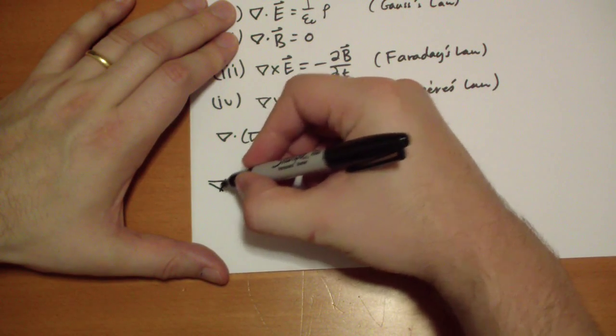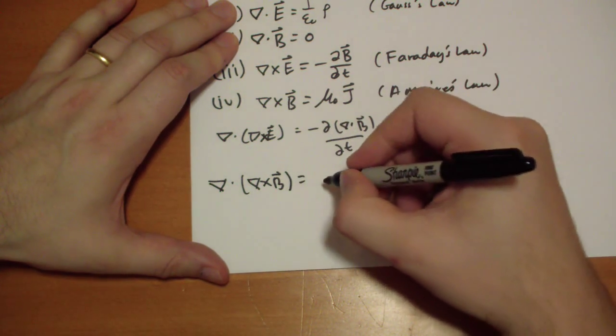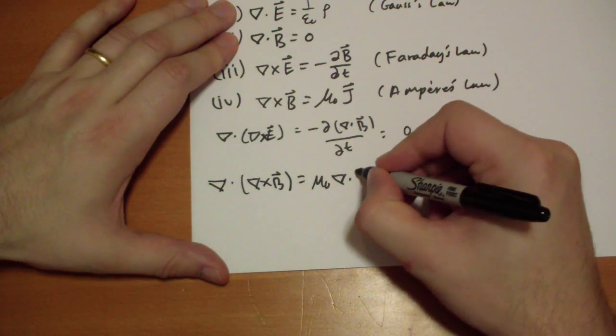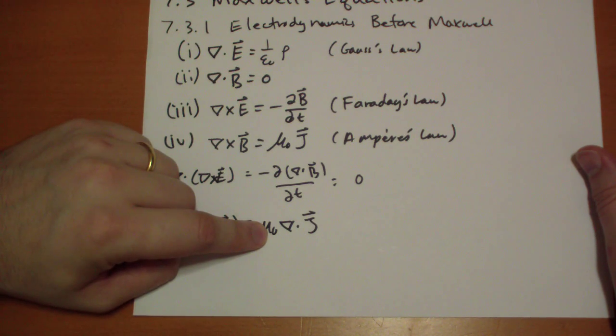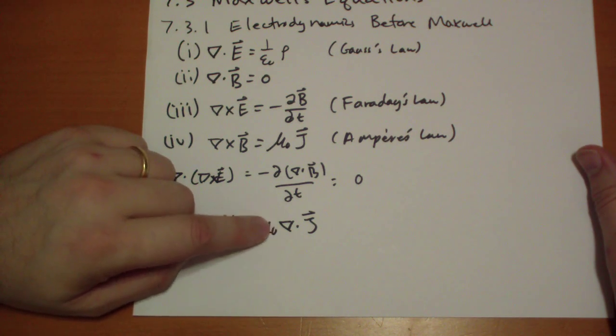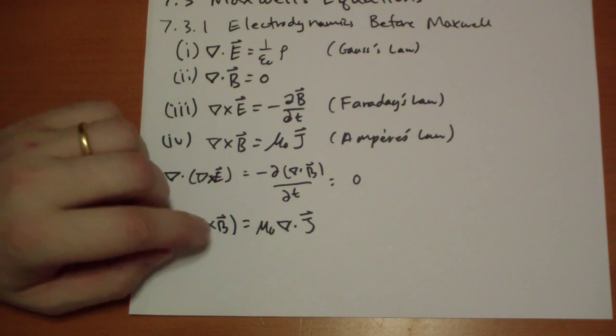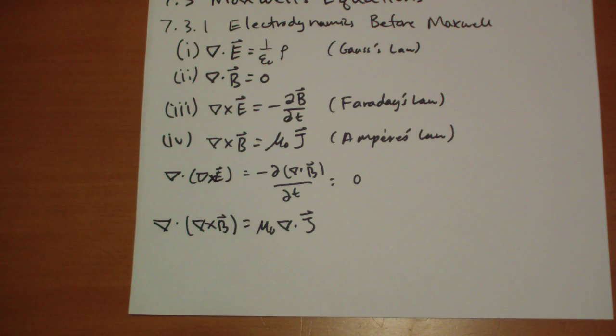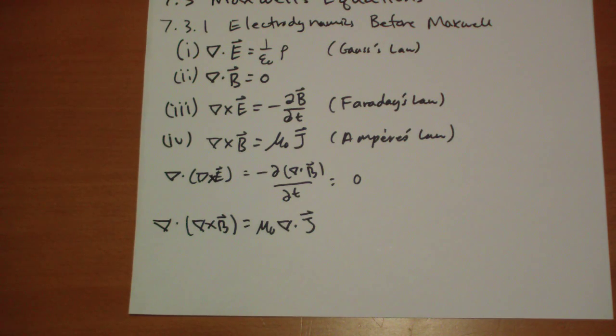But when you go to do this to Ampere's Law, well, that's just going to give you mu naught times the divergence of J vector. Which, if you remember back in Chapter 5, when we first talked about steady currents, we said that in order for a steady current to exist, the divergence of the currents has to be zero. But in this case, that's not necessarily true. You can have currents accumulate and build up a charge. And we've been doing it with the magnetic fields. Why can't we do it with the currents and with electric fields? And so, this is most decidedly not zero.